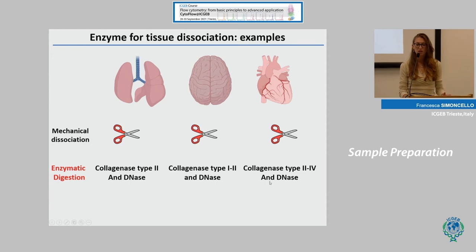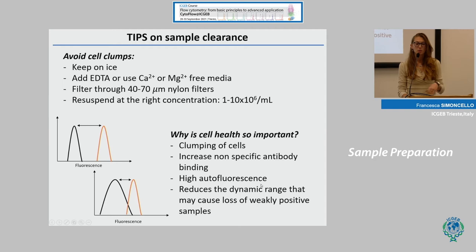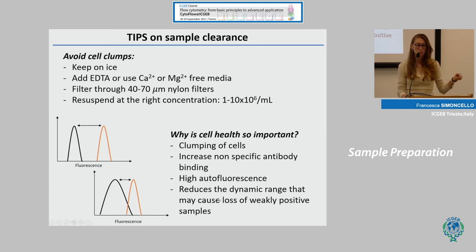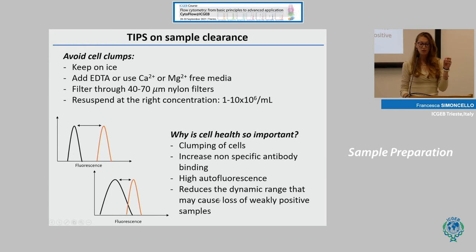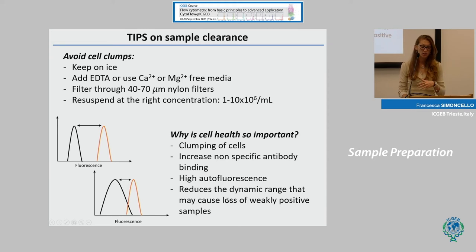For heart tissue, the best combination is collagenase type 2 and collagenase type 4 together with DNase. Always check the literature for the best procedure for your sample. Once you have a single cell suspension, you also have to care about sample clearance. It's important to avoid clump formation — keep your cells on ice, add EDTA to remove calcium or magnesium, or use calcium and magnesium-free media. Just before acquisition, filter your sample through nylon filters.